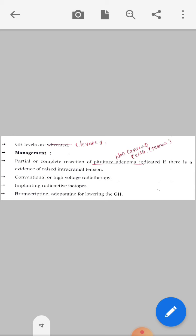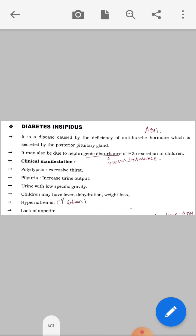Next, we will see about diabetes insipidus. What is diabetes insipidus? It is a disease caused by the deficiency of antidiuretic hormone, which is secreted by the posterior pituitary gland. It may also be due to nephrogenic disturbance of water excretion in children, meaning water imbalance in the child.